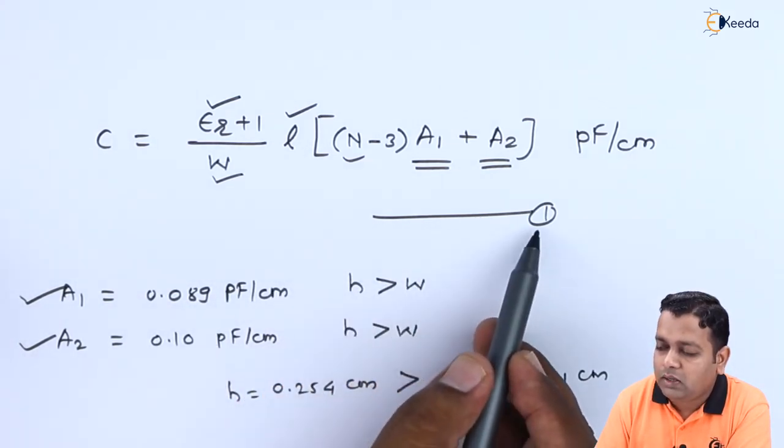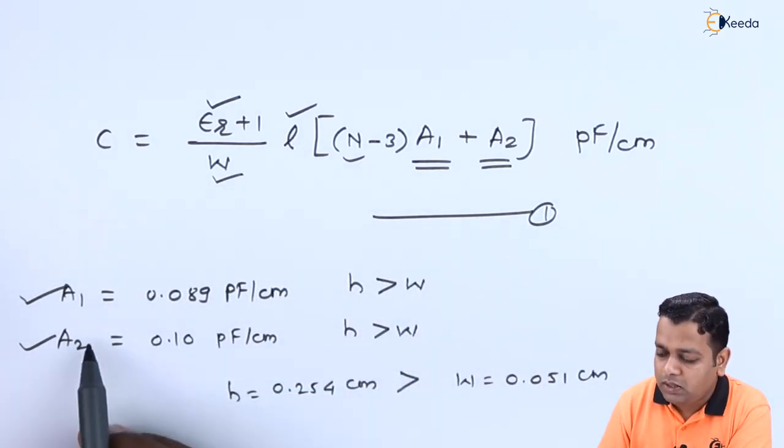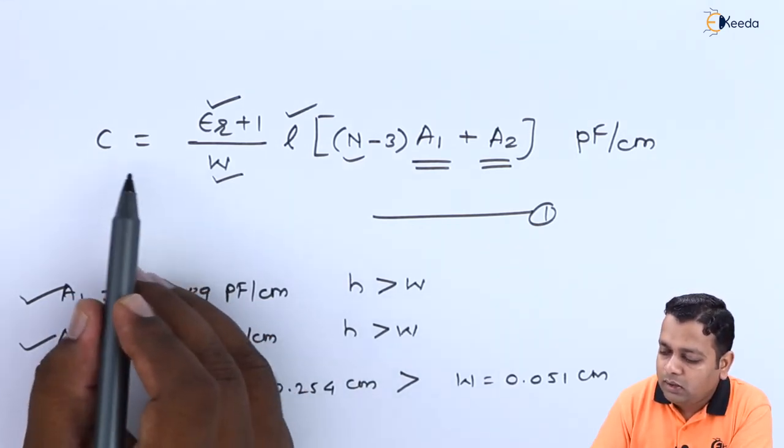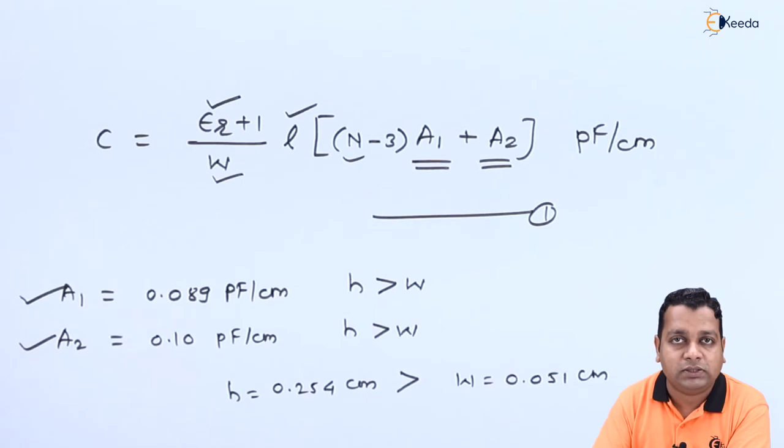And we can get the equation number 1 substituted by A1 and A2 by these two RHS values and can further compute the capacitance here. So let us now have the substitution to the right hand side for determination of capacitance.